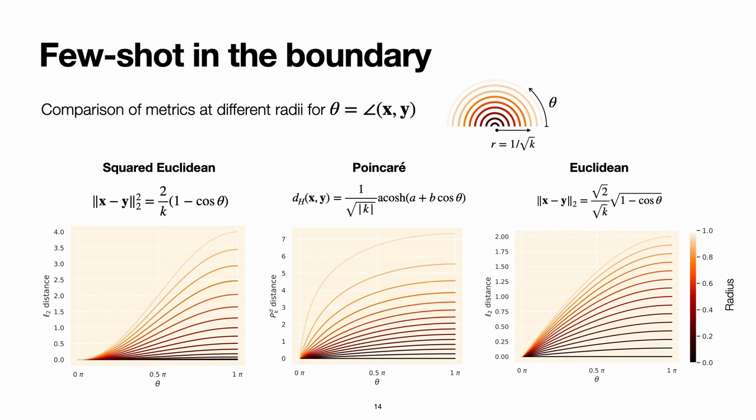We can see here that the squared Euclidean is considerably different from the Poincaré metric. And note that the squared Euclidean metric was the one typically used in prototypical networks that were compared against hyperbolic space.